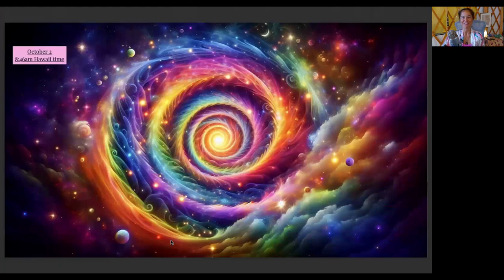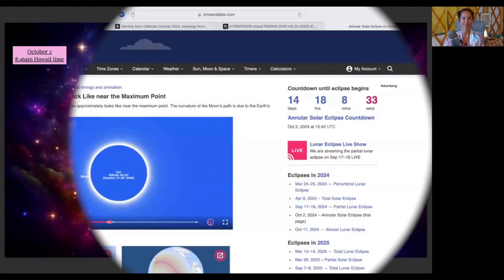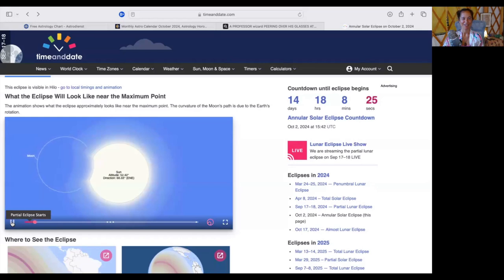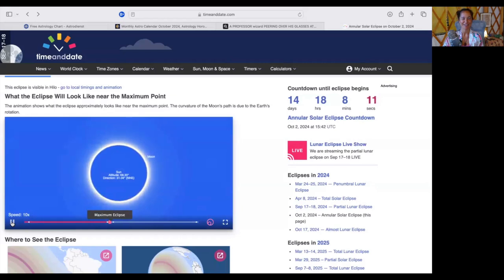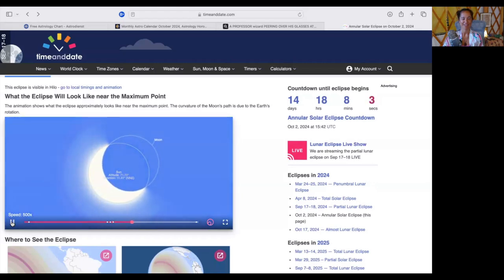All right, so we're going to go through the portal now. And I first want to show you what this annular solar eclipse is and where in the world it is going to be casting its shadow and its light and its path, the eclipse path. So we're going to check that out first. Okay, so this is the eclipse going on, showing the partial eclipse, moving closer and closer to totality.